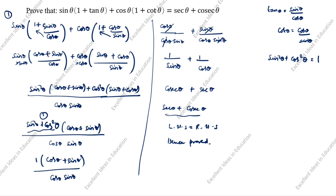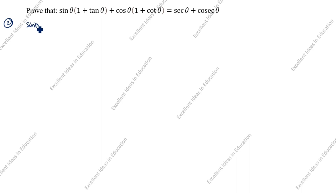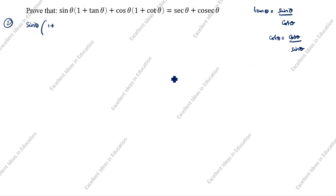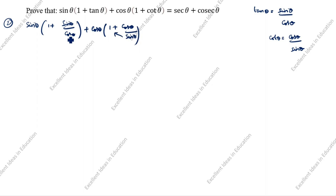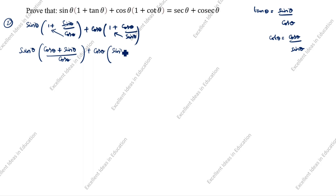This is the first method. Second method: what is given — sin θ into (1 + tan θ). How we will write tan θ? tan θ is equal to sin θ by cos θ. cot θ, how we will write? cos θ divided by sin θ. So tan θ we write as sin θ by cos θ, plus cos θ open bracket 1 plus cos θ by sin θ.